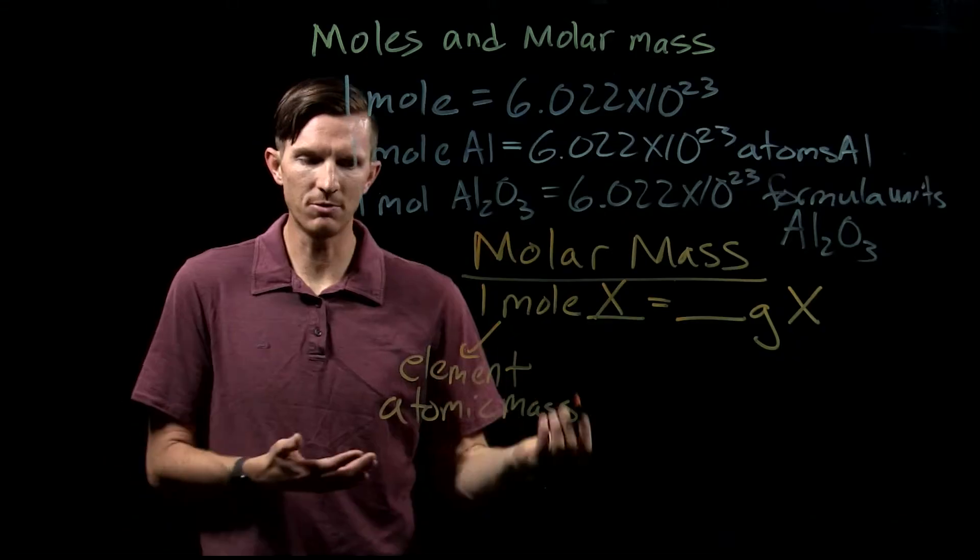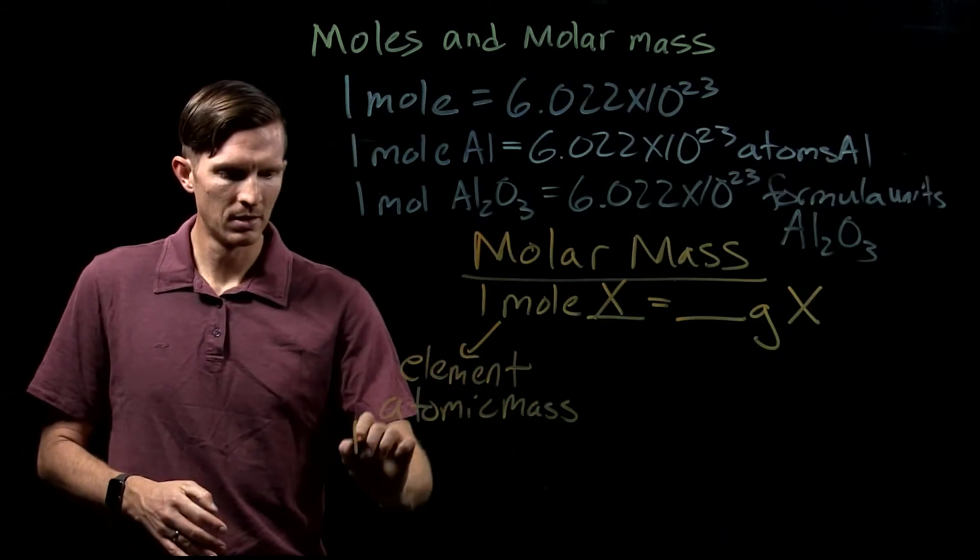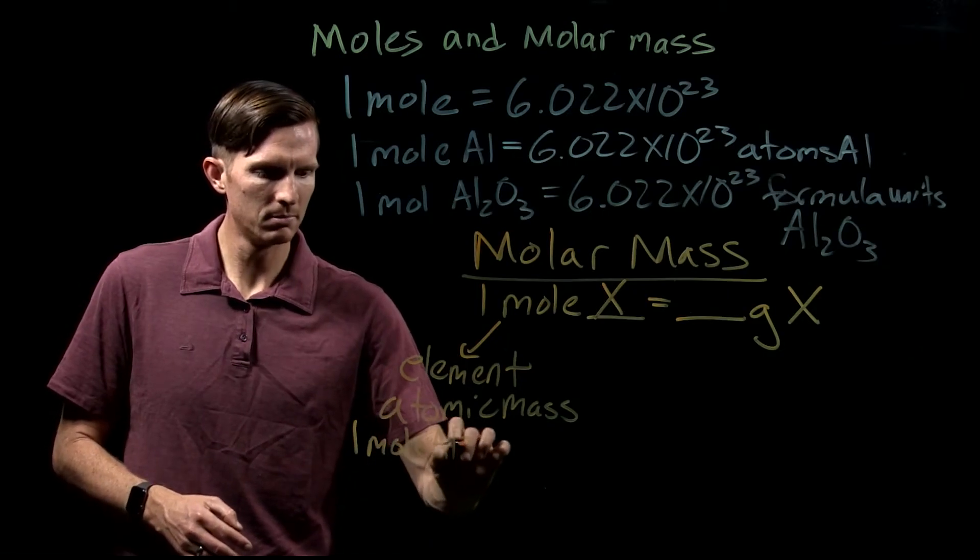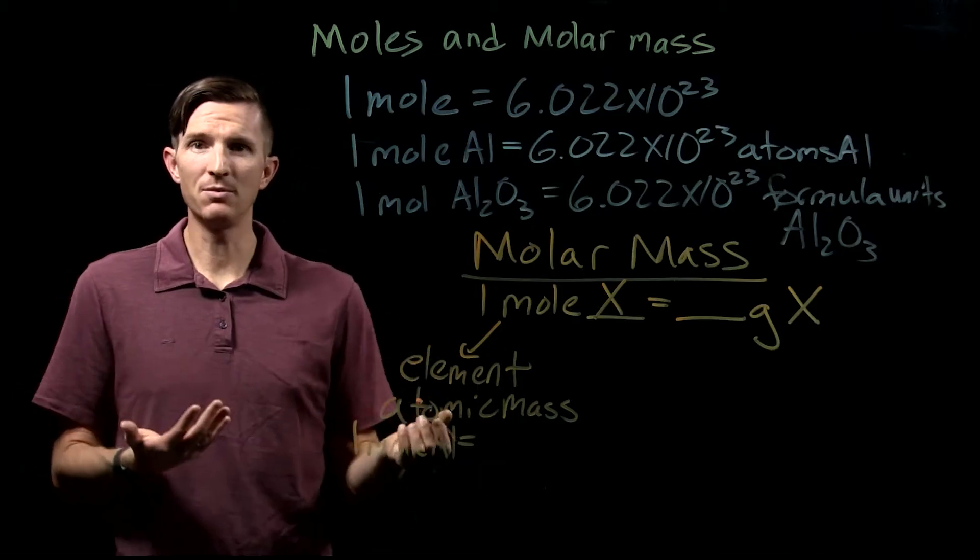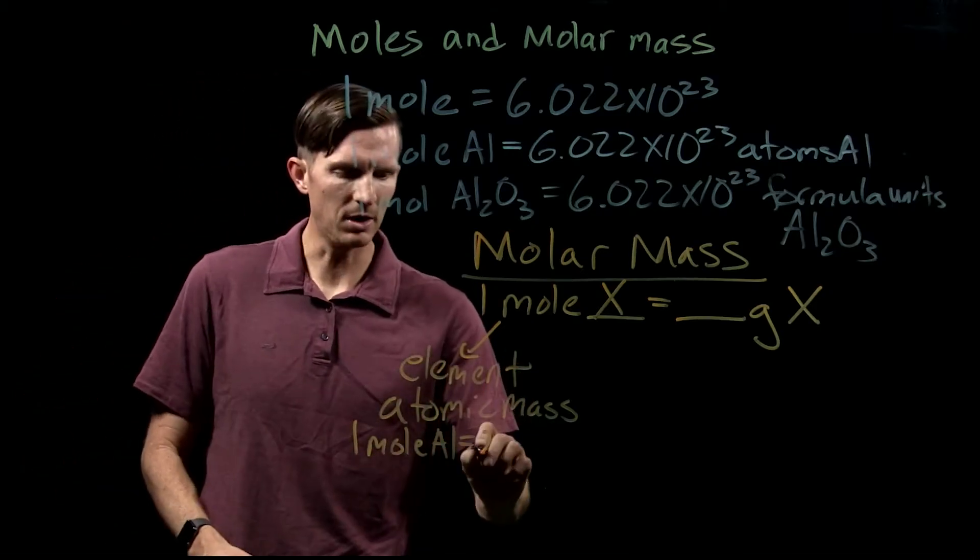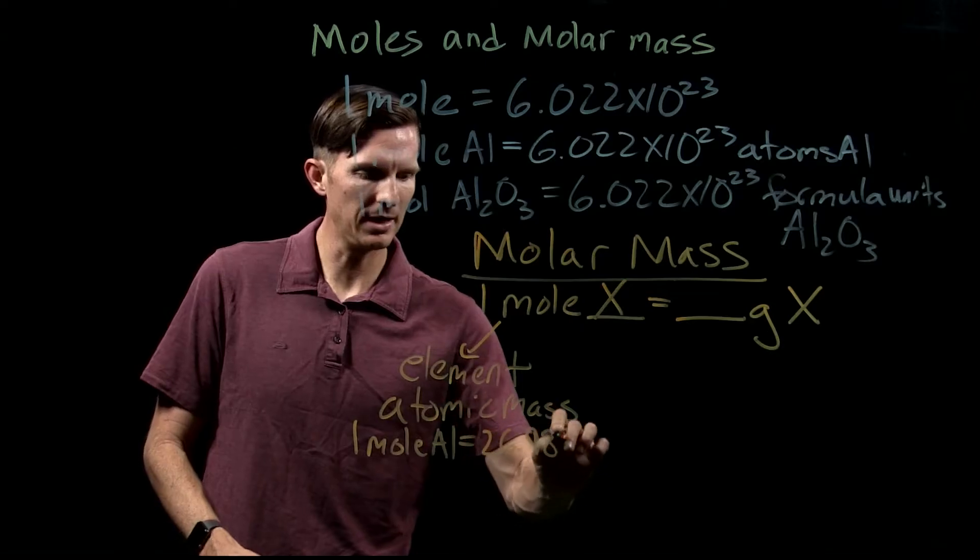So the atomic mass. For example, I would say one mole of aluminum is the atomic mass of aluminum. Where are we going to get this from? 26.982 grams.